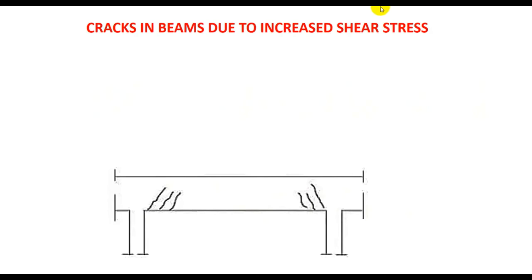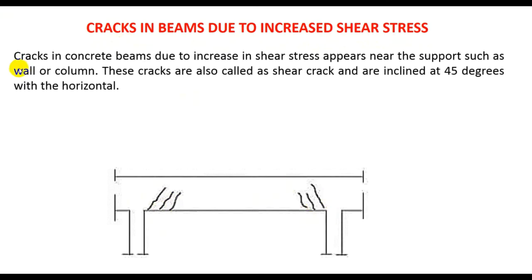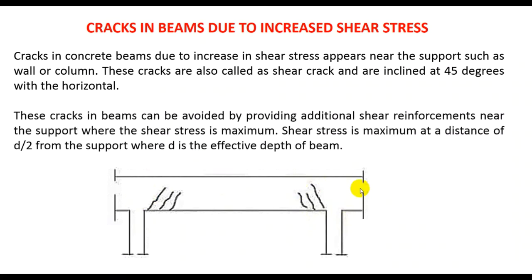The first type is crack in beams due to increased shear stress. These types of cracks appear near the support, such as a wall or column. Those cracks are also called shear cracks and are inclined at 45 degrees with the horizontal. They occur near the column joint, where the shear is maximum.